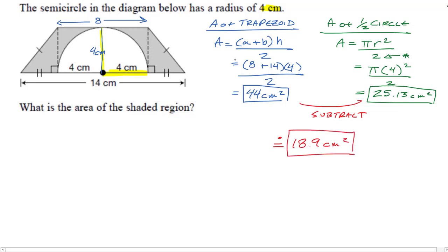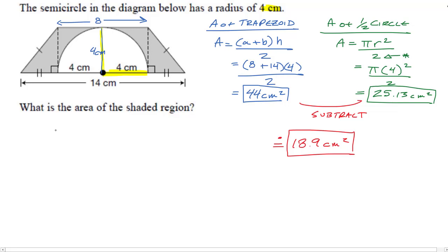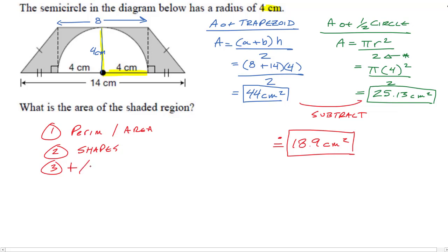To wrap up: step one, ask yourself is it a perimeter or area question? Step two, identify what shapes you see. Step three, decide whether to add or subtract those shapes. And be careful when you need to modify a formula — like dividing by two for a half circle, or dividing by four for a quarter circle. That's it for this lesson.